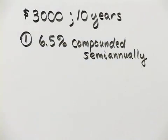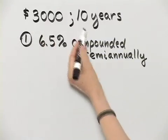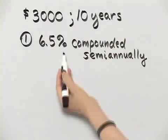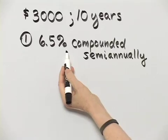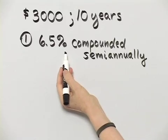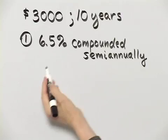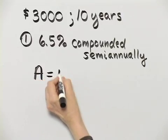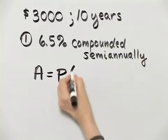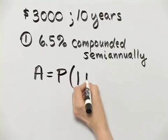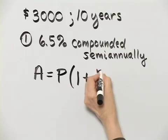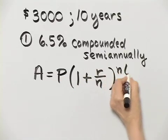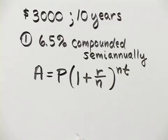Well, let's see. Here's the amount of money, here's the number of years, and here is our first option. Now remember our formula: A equals P times one plus R over N, to the NT power.